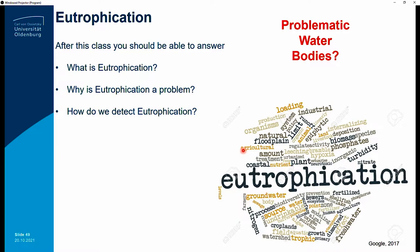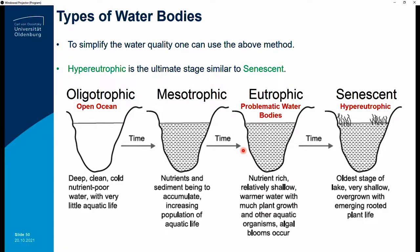The last part of today's discussion is eutrophication. After this class you should be able to answer: what is eutrophication, why is it a problem, and how you can identify it. Eutrophication in problematic water bodies — the word itself relates to a fertilized ability. Parameters like groundwater, biodiversity, and croplands are all related or linked to eutrophication. To simplify water quality, one can use water body classification to identify different types.